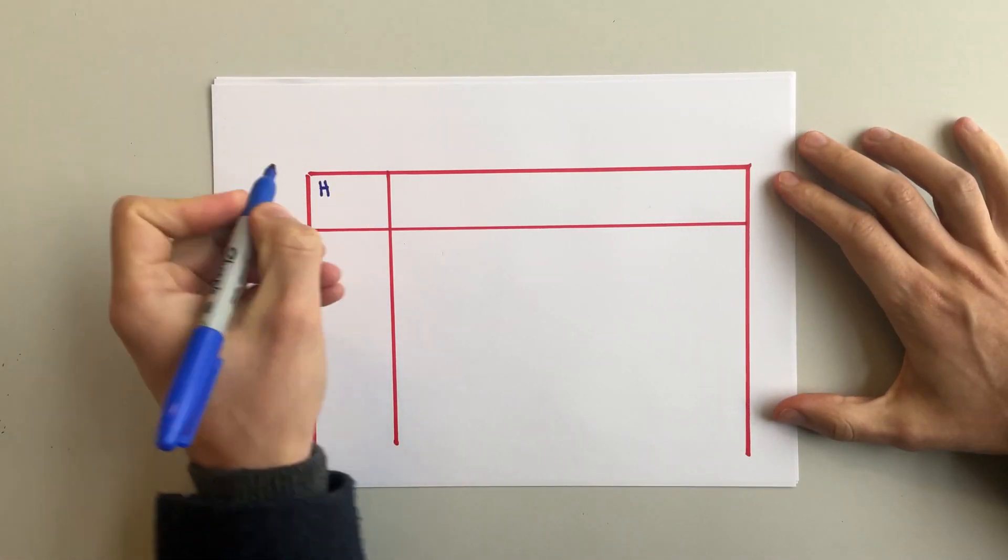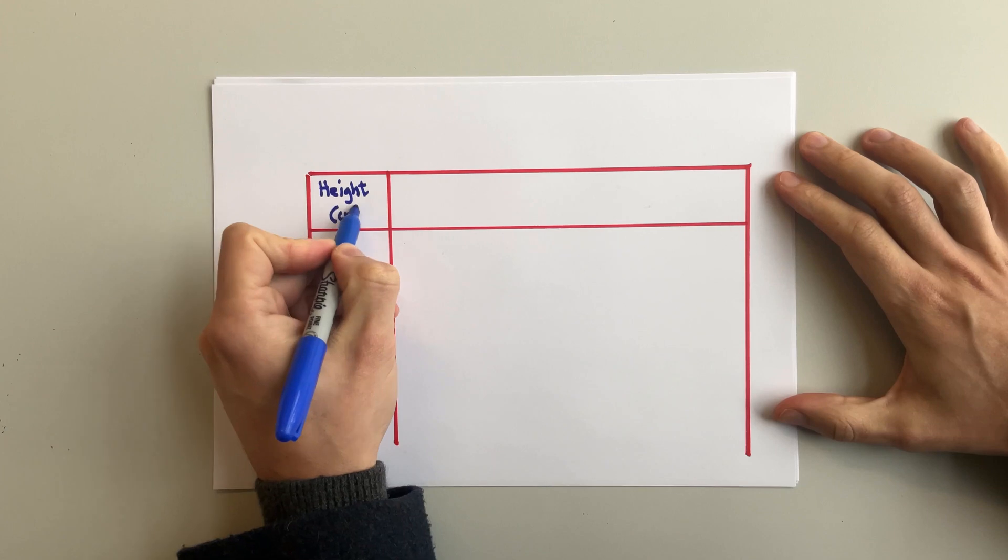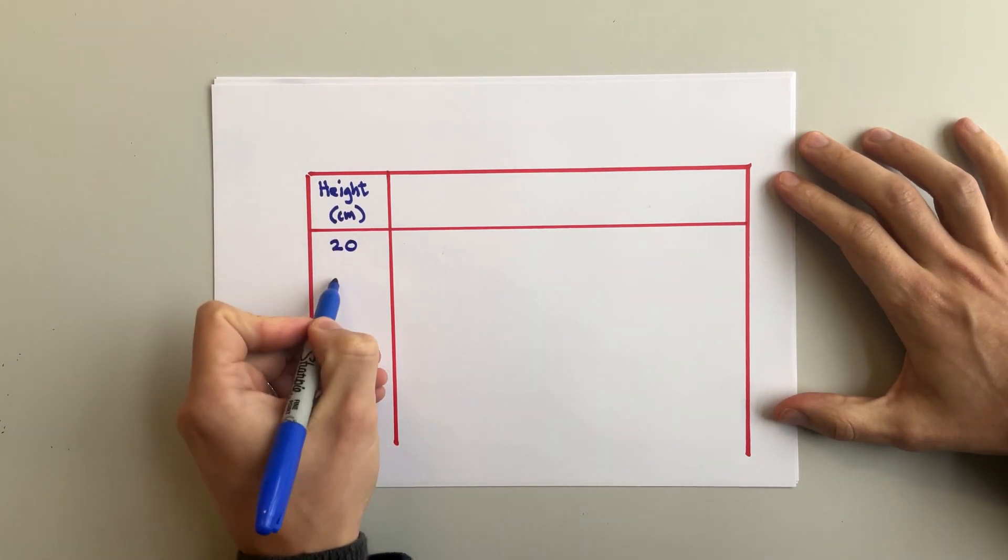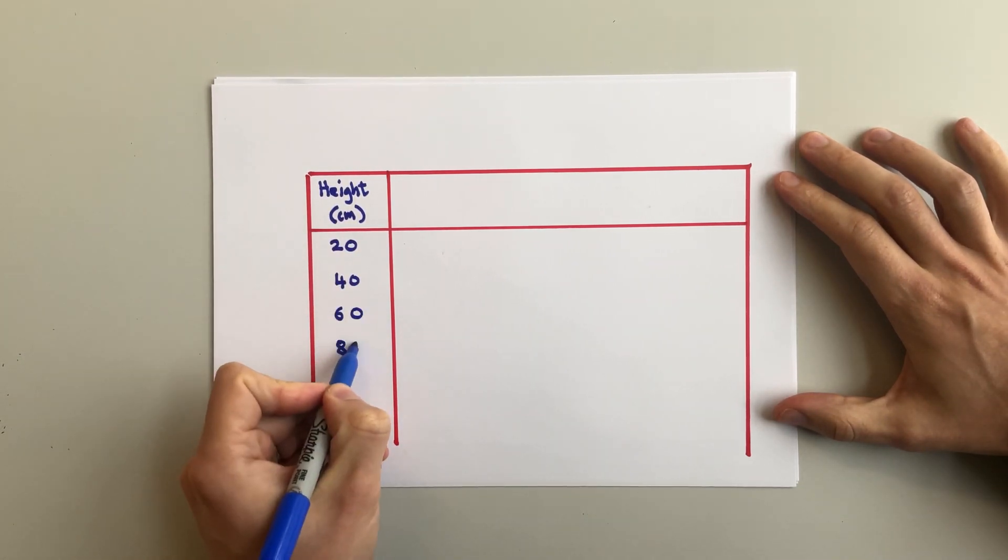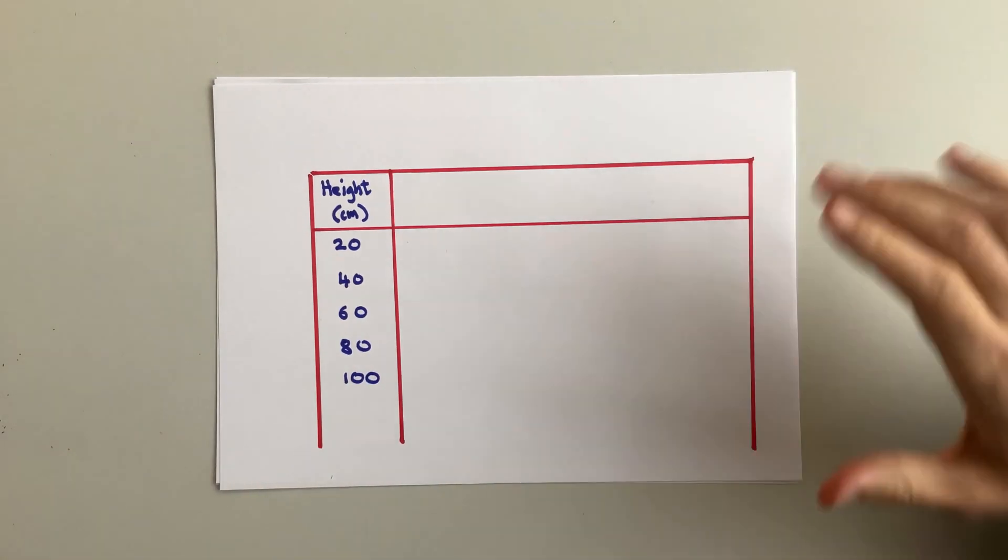So we put height at the top of the column. Then brackets, and in there the unit we're measuring in, centimetres. Finally, we add the values we picked before the experiment started.